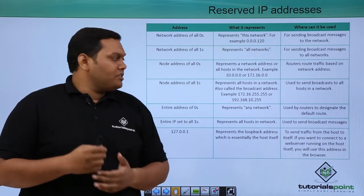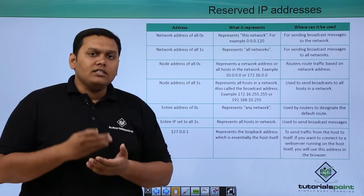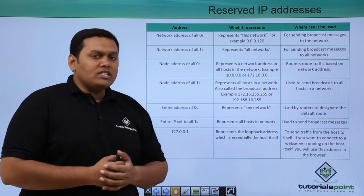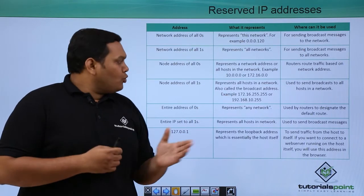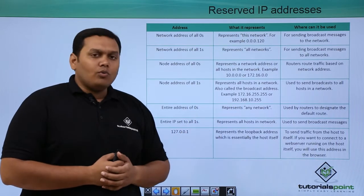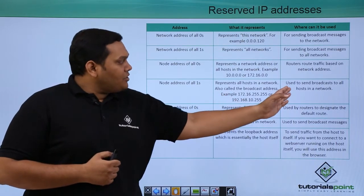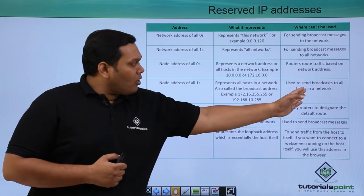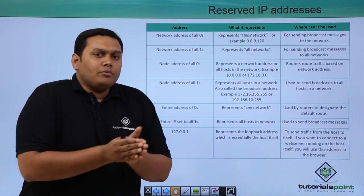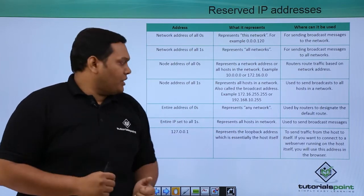Coming to node addresses of all ones — this represents all hosts in a network, also called broadcast addresses. Examples include 172.16.255.255 or 192.168.10.255. It is used to send broadcasts to all hosts in a network.